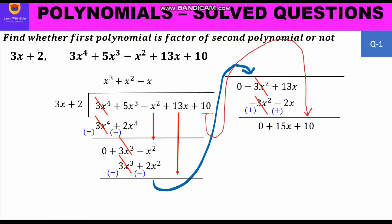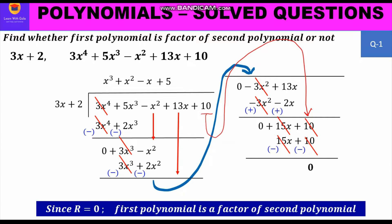We bring down 10, giving a new dividend of 15x + 10. Dividing 15x by 3x gives +5, which we write on top. Multiplying 5 by each term of the divisor: 5 × 3x = 15x and 5 × 2 = 10. After changing signs: +15x becomes -15x and +10 becomes -10. Then 15x and -15x cancel, and +10 and -10 also cancel, leaving remainder 0. Since the remainder is 0, the first polynomial (3x + 2) is a factor of the second polynomial.